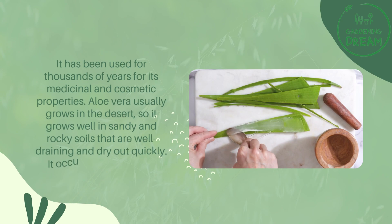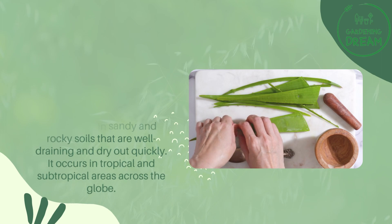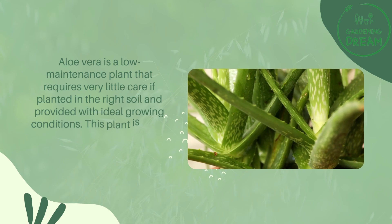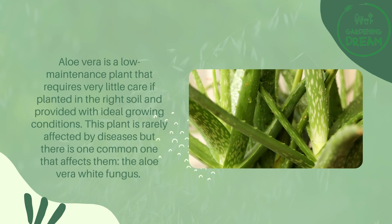Aloe vera usually grows in the desert, so it grows well in sandy and rocky soils that are well draining and dry out quickly. It occurs in tropical and subtropical areas across the globe. Aloe vera is a low maintenance plant that requires very little care if planted in the right soil and provided with ideal growing conditions.